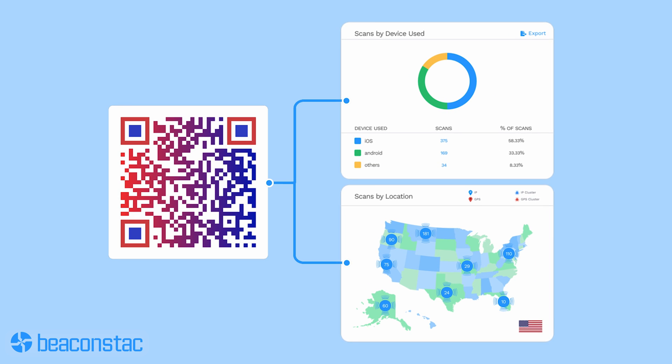We recommend using a dynamic QR code for your links. BeaconStack dynamic QR codes are editable, customizable, and trackable. You can also create a custom link domain with a dynamic QR code. You can track your QR code for the link and website and analyze the data with BeaconStack's comprehensive analytics features — for instance, you can track the number of scans, devices used, the location of the scan, and a lot more.